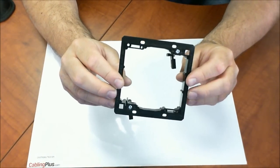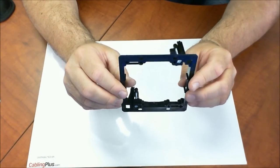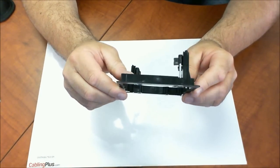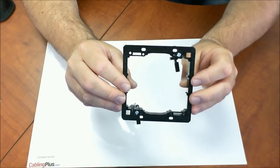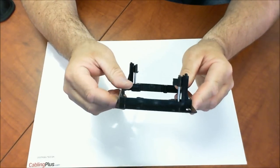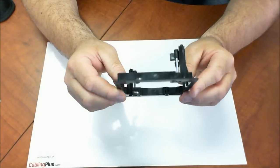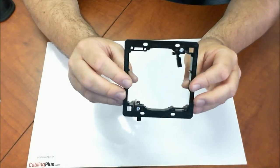This is Eric with cablingplus.com, and today I want to show you the LV2 from Arlington Industries. It's a non-metallic low voltage mounting bracket that you're going to use to put in the wall to create a new outlet in the home or business to support a...